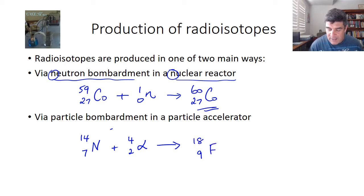From the periodic table, you find that element number 9 is fluorine. So fluorine 18 is another one of our medical application radioisotopes, and it can be produced by particle bombardment in a particle accelerator.